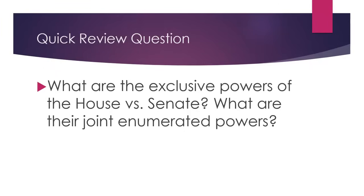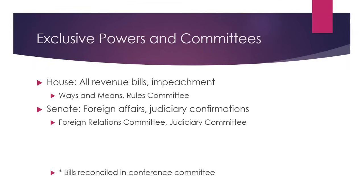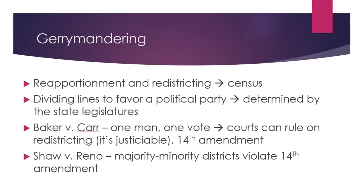Pause this once again — what are some of the exclusive powers of the House versus the Senate, and what are their joint enumerated powers? In terms of enumerated powers, their joint powers: both the House and the Senate can declare war, they can tax, they can regulate commerce, create money. But they also have exclusive powers. The House — all revenue bills have to start there, particularly with the Ways and Means Committee. The Senate is superior in foreign affairs, judiciary confirmations with respect to the Judiciary Committee, as well as the Foreign Relations Committee. These two come together when bills are reconciled with respect to the passage of a bill becoming a law.